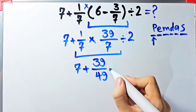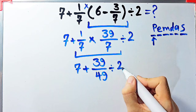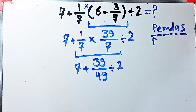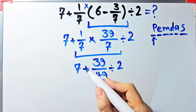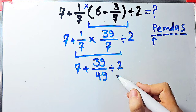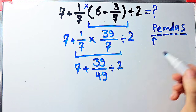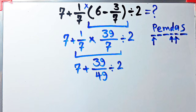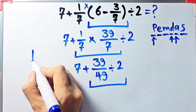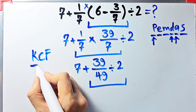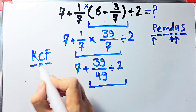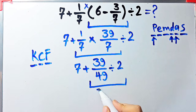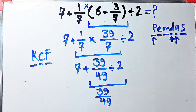The question is now: seven plus thirty-nine over forty-nine divided by two. We have addition and division. First we simplify the division because division has higher priority than addition. We have thirty-nine over forty-nine divided by two. To solve this part we need to follow the KCF rule: K stands for keep, C stands for change, and F stands for flip.